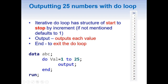We can do this simply with the help of an iterative DO loop. The iterative DO loop has the following structure: it starts with DO, then we have an index variable, then equal to 1 to 25 — where 1 is our starting point and 25 is where we stop. We also have an explicit output statement, which helps us output each value.